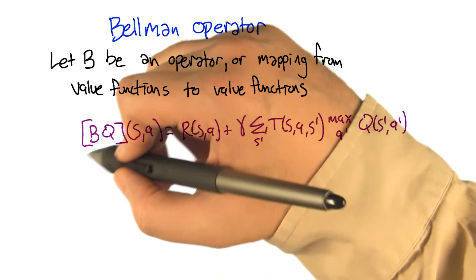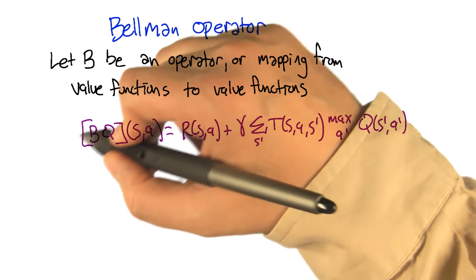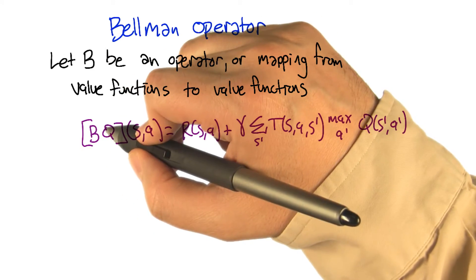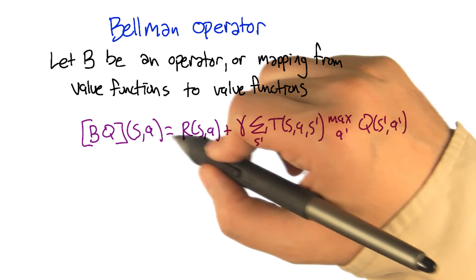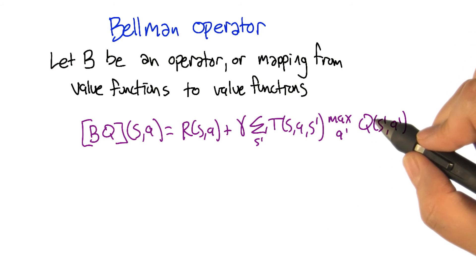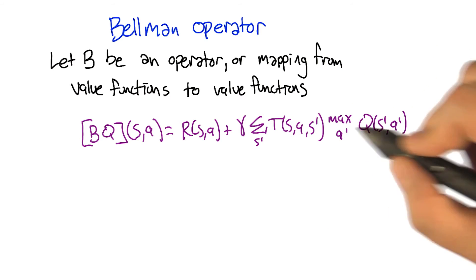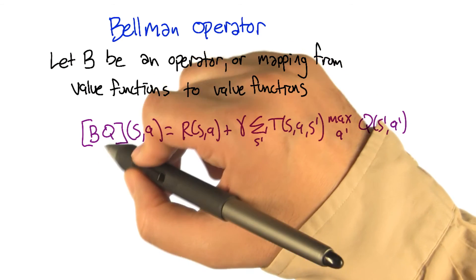So here's how we're going to define this Bellman operator B. We're going to give it a Q function, and the new thing that we get out, this B applied to Q, has the property that at state action pair S A, it's equal to the immediate reward plus the discounted expected value of the next state, where we look up the value of the next state using whichever Q function we were given as input to the operator.